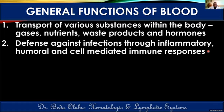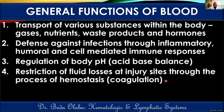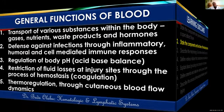White blood cells also defend against cancer cells. Blood is important in regulating body pH through various buffer systems in the bloodstream. Blood also helps restrict blood loss at injury sites through the process of hemostasis. Lastly, blood is important in thermoregulation because blood flow to the skin varies depending on body temperature, promoting heat loss or conserving heat as needed.